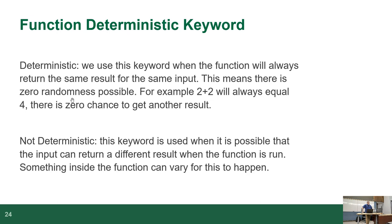DETERMINISTIC means if you pass the same arguments in twice, it won't even run the function the second time — it returns the cached value. For example, 2+2 will always equal 4, so it can cache the result. NOT DETERMINISTIC is used when the function might return a different result, for example you're generating a random hash as a salt for a password, or generating an API key — even if you pass the same thing in, the key should always be different every time. Therefore it's not deterministic.